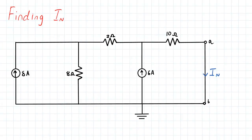So to find our Norton current, what we need to do is apply a short circuit between A and B, and our Norton current will be the current that flows through this short circuit.